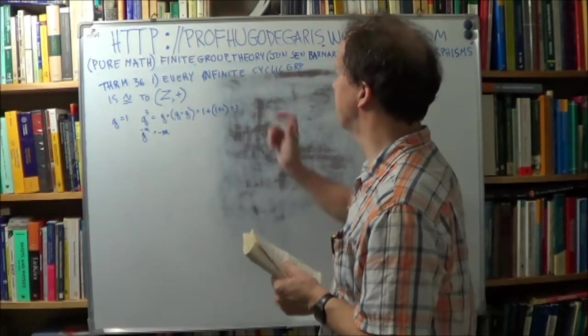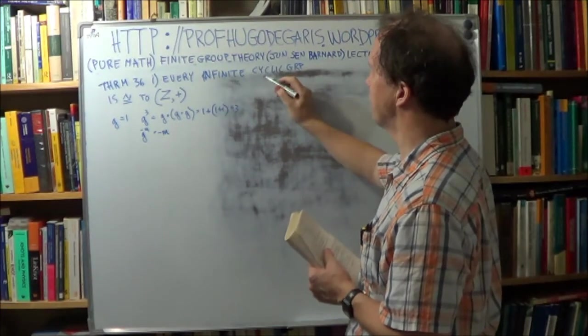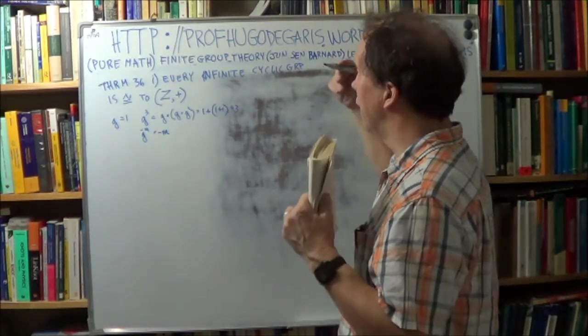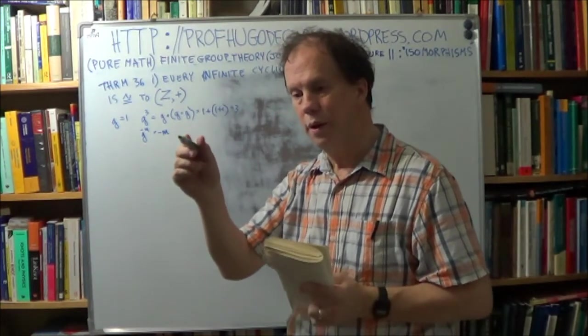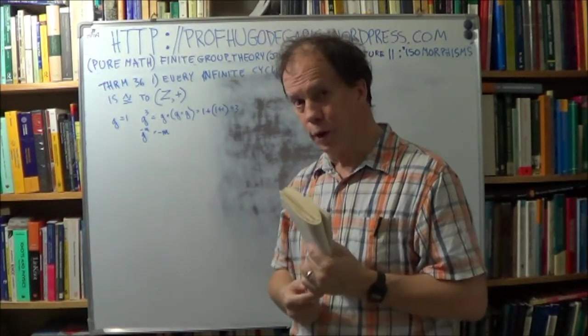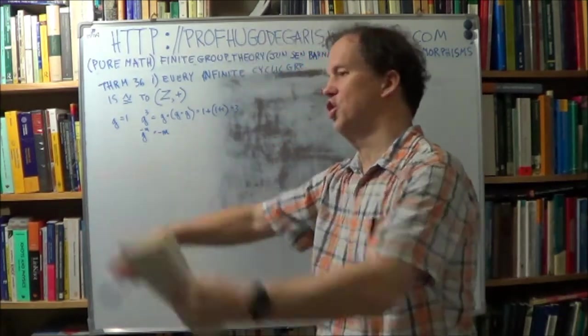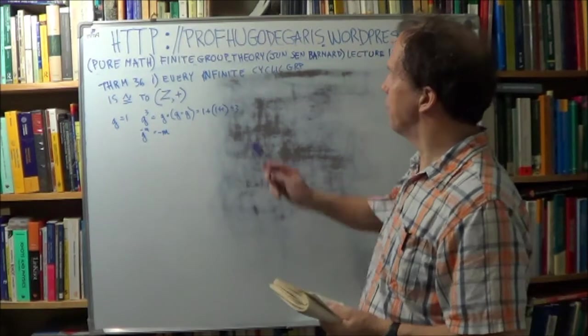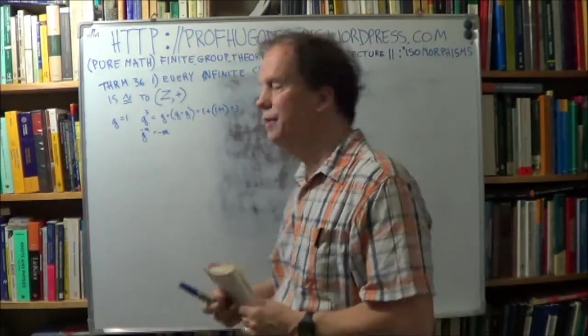So I can get all the integers. So you've got an idea now what an infinite cyclic group is. It's cyclic, it has a generator, and that generator has no finite order, right? Its order is infinity. So it can just generate members of this infinite group forever. It just goes on and on.